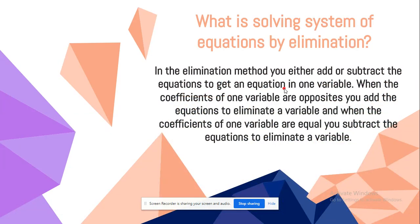In the elimination method, you either add or subtract the equations to get an equation in one variable. When the coefficients of one variable are opposite, you add the equations to eliminate a variable. And when the coefficients of one variable are equal, you subtract the equations to eliminate a variable.